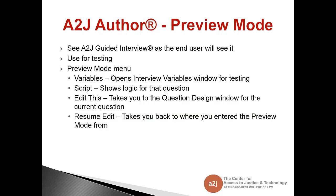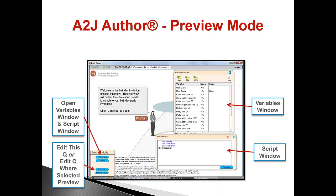Another important feature in A2J Author is the preview mode. You can access the preview mode by clicking the preview tab or by clicking the preview button that comes up with each design window. In the preview mode you can see your A2J guided interview as the end user would see it. This is great for testing purposes and in the preview mode there is the preview mode menu which contains the variables, script, edit this, and resume edit. By clicking variables it will open up the interview variables window. The script button will open up the scripting window which shows the logic for that question. Edit this takes you to the question design window for that current question and resume edit takes you back to the question where you entered the preview mode from. As you can see the preview mode shows you the end user view but it also allows you to overlay that variables window and the scripting window. These are invaluable for testing and troubleshooting.